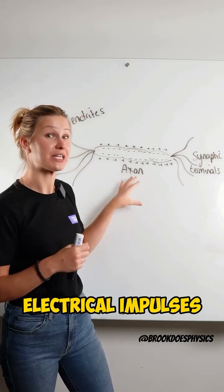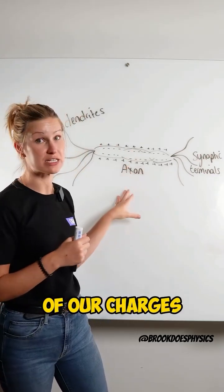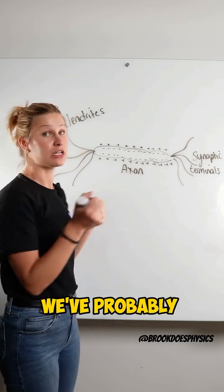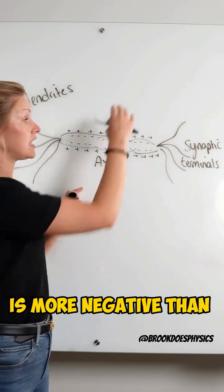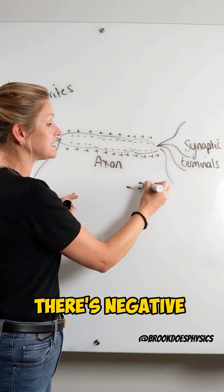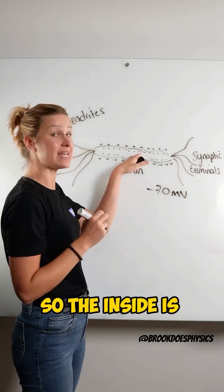How those electrical impulses work is because of charges. Inside an axon, you've probably learned from biology classes that the inside is more negative than the outside. There's negative 70 millivolts of difference. So the inside is more negative.